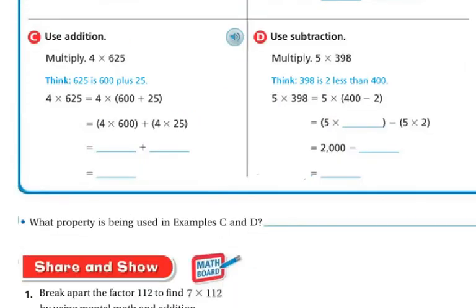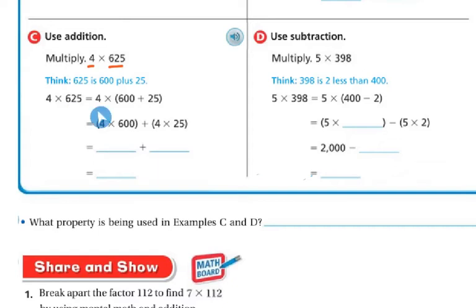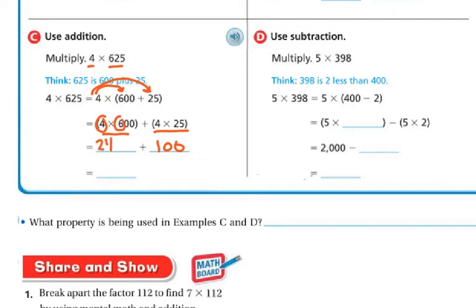You can also use addition as a mental math strategy. For 4 times 625, think of 625 as 600 plus 25. Using the distributive property, that's 4 times 600 plus 4 times 25. 4 times 25 is like having four quarters — that's a dollar, so 100. And 4 times 600: 4 times 6 is 24, plus two zeros is 2,400. Then 2,400 plus 100 is 2,500.